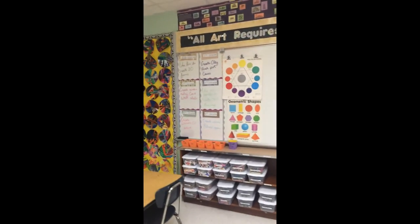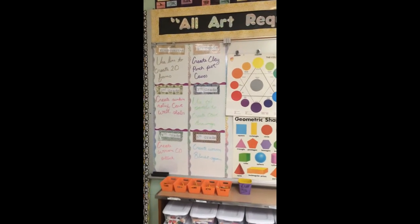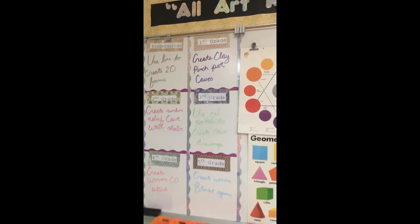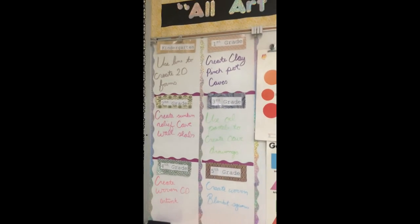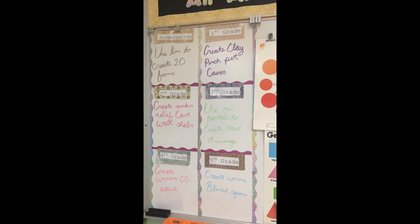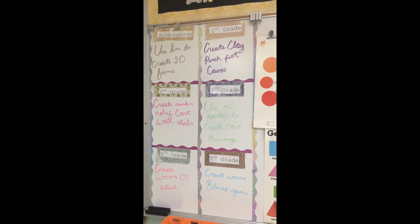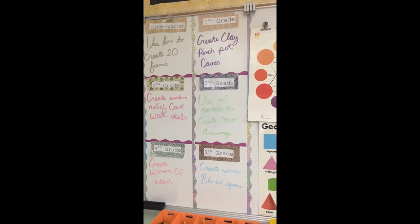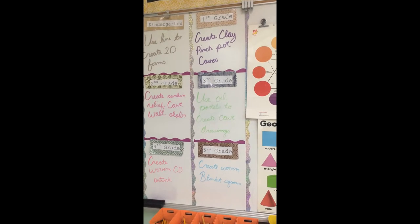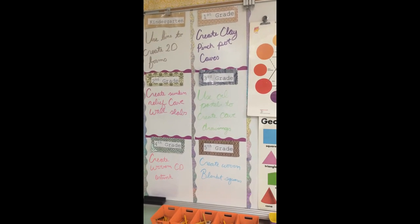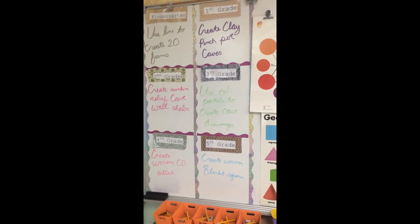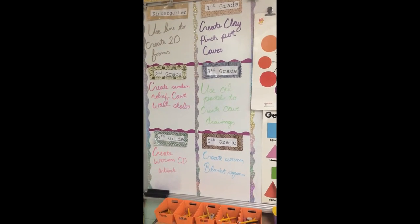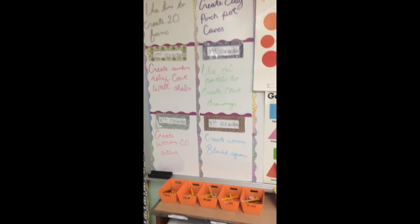On my whiteboard I have this broken up into six squares — basically the objectives for each grade level during that time. I have kindergarten through fifth, so students can look back at their square if they've forgotten what they were doing. It's a reminder of the objectives of that lesson, since I only get to see them one or two times a week.